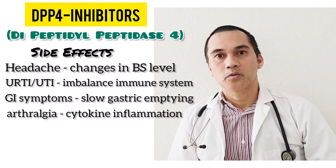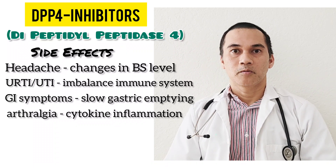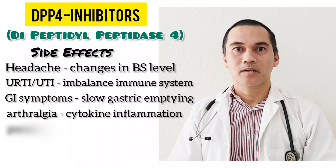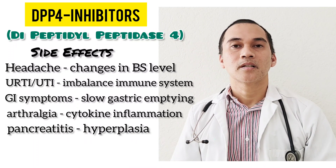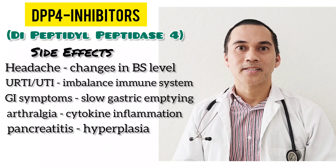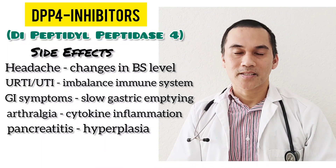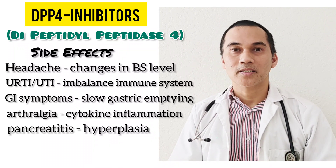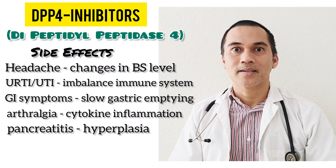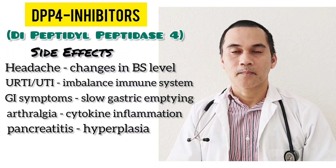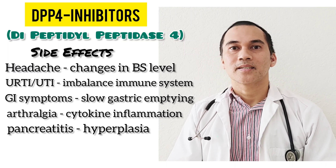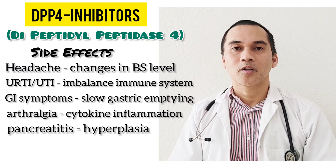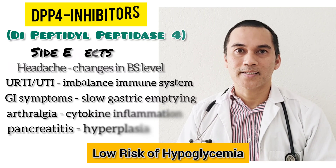Joint stiffness is caused by cytokine-induced inflammation of the synovium. This medication can also cause pancreatitis, because GLP-1 now has a longer half-life. The longer it stays, it can cause overgrowth of cells that cover the small ducts of the pancreas — hyperplasia — which can block those ducts causing pancreatitis. And because insulin release is dependent on glucose, this medication has a low risk of hypoglycemia.